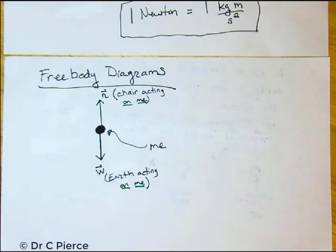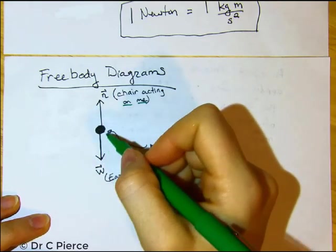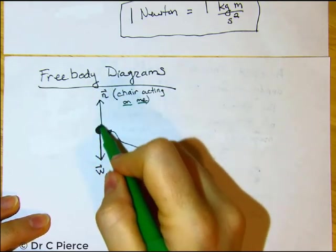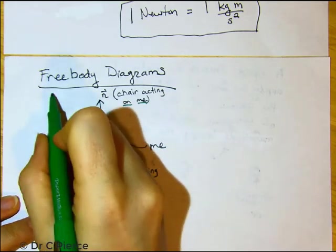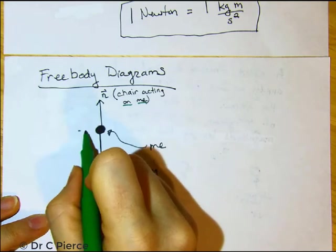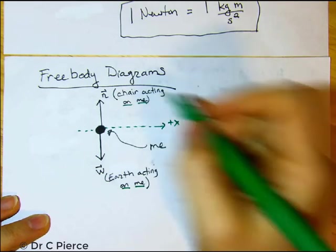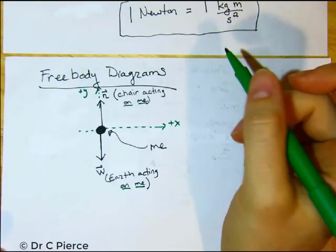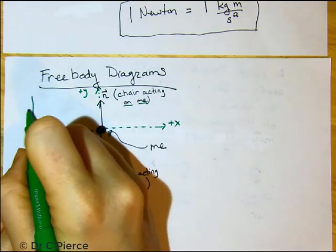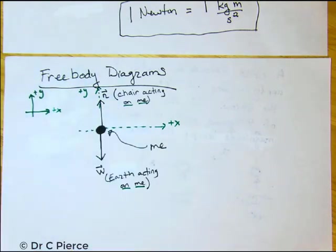There's a couple more things that we should do just to be formal and complete. One is to assign a coordinate system. Your textbook likes to have you draw it right on top of the object so that the object is at your origin. You don't have to, you can note it off to the side. But let's just do what your book is doing right now. So how about we call that the plus x direction? And we can call that the plus y direction.